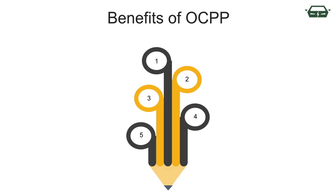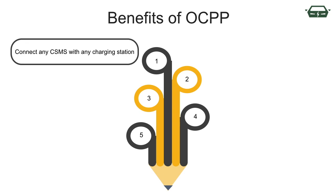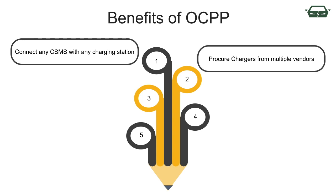Compared to a proprietary protocol, let us see what are the benefits of using open-source OCPP. OCPP makes it possible to connect any CSMS with any charging station, provided both are OCPP compliant. That means a charging facility owner is free to select the charging network provider that meets their needs. The standardized open protocol also gives charging point operators the flexibility to procure charging equipment from multiple OCPP-compliant manufacturers.